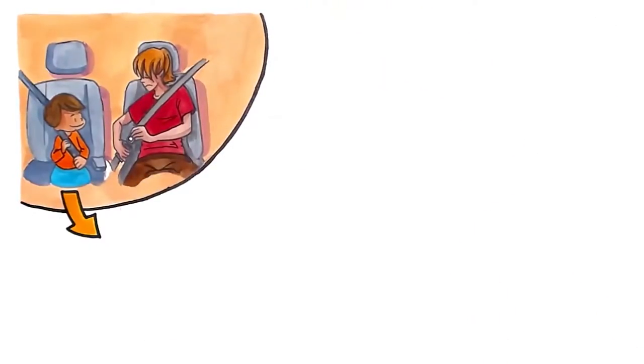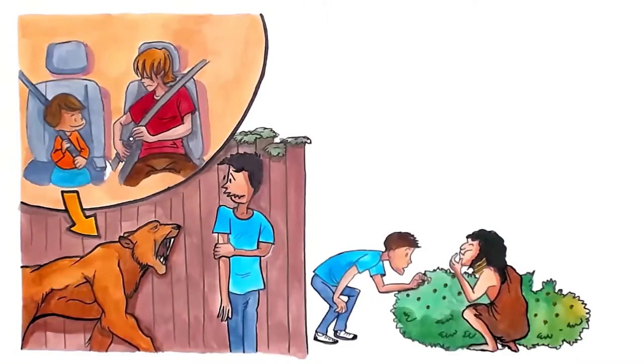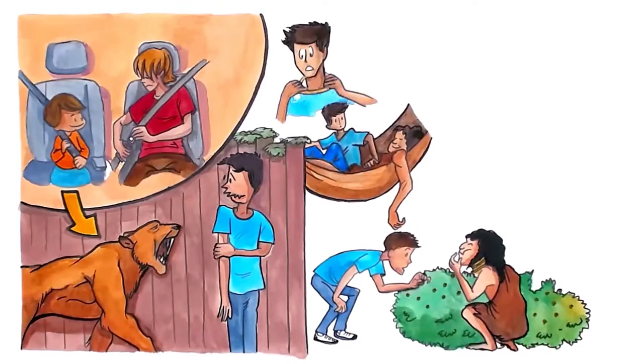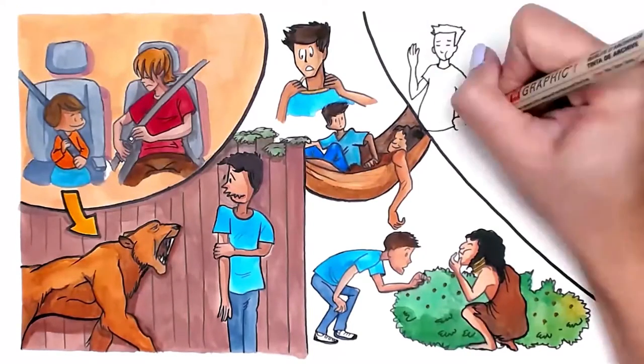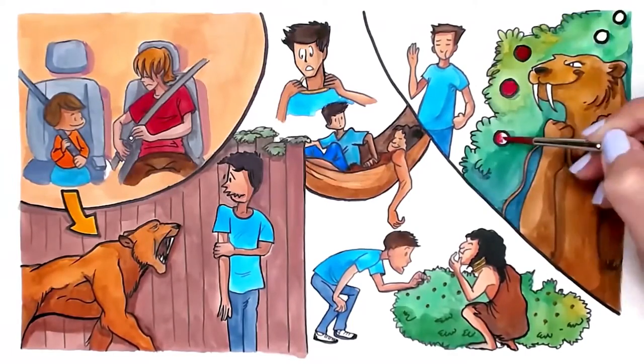Imagine you're sent back to a hunter-gatherer community 4,000 years ago. You would eat what they eat, sleep where they sleep, and mimic pretty much everything they're doing. Failure to mimic could lead to an attack by a wild animal or poisoning from a tasty looking berry.